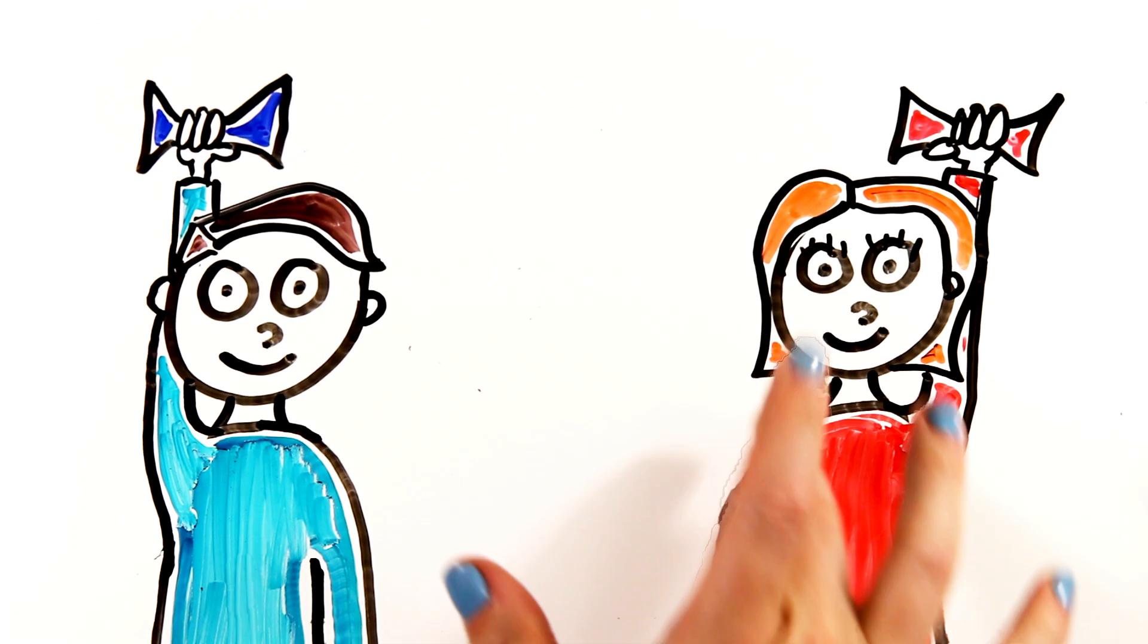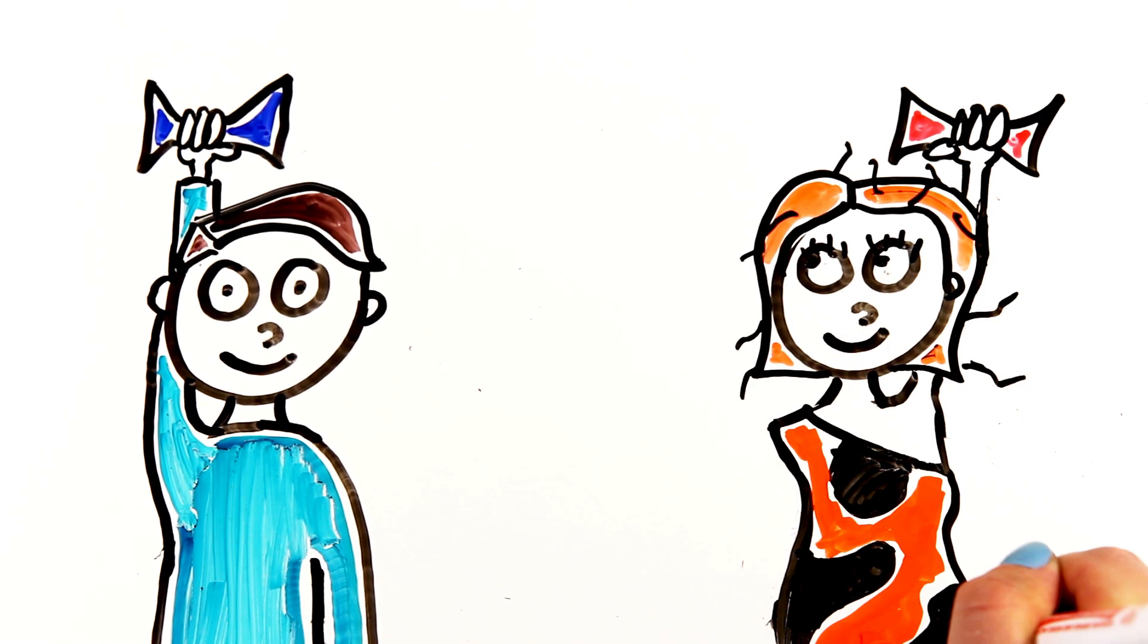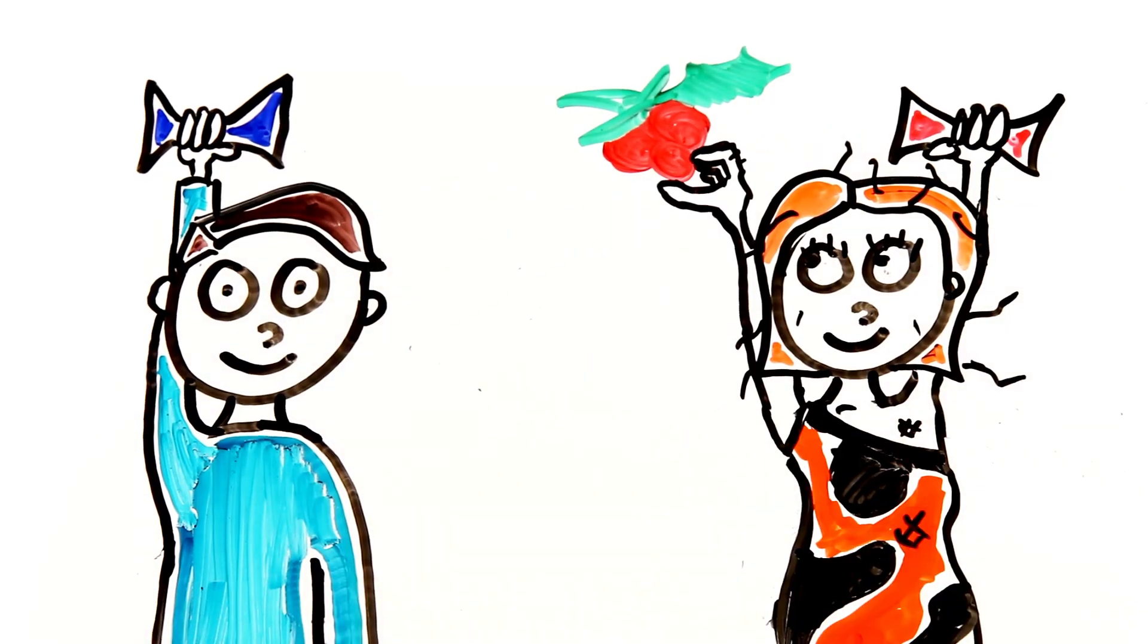Researchers hypothesize this preference has evolved from our hunter-gatherer societies, where women's visual systems were specialized to see ripe red berries against green foliage.